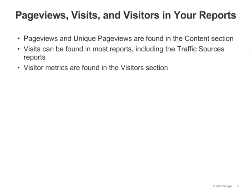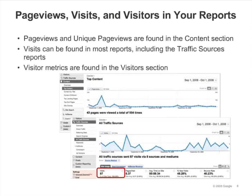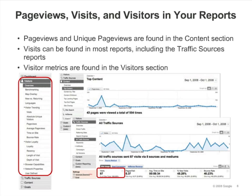The pageviews metric can be found in the visitors overview and in the content section reports. Most of the other reports show pages viewed per visit instead of pageviews. Unique pageviews is only found in the content section. Almost all of the reports show visits. The visitors metric — in other words, the number of visitors who came to your site — is found in the visitors section.